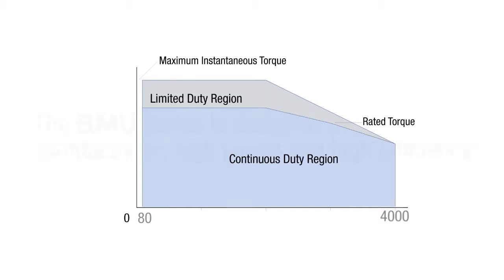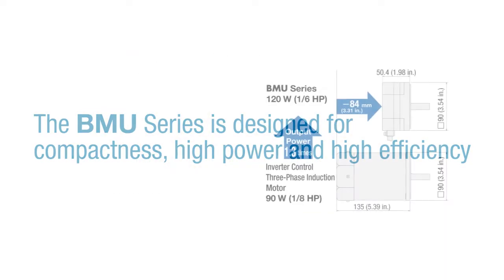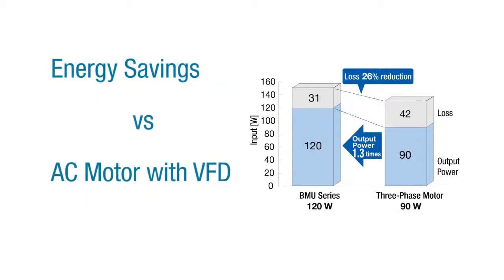The new brushless motors are highly effective at energy efficiency. When compared to an AC induction motor controlled by a VFD, the BMU Series brushless motors are highly energy efficient. The brushless motor produces 1.3 times the output power of the AC induction motor while reducing energy loss by 26%.